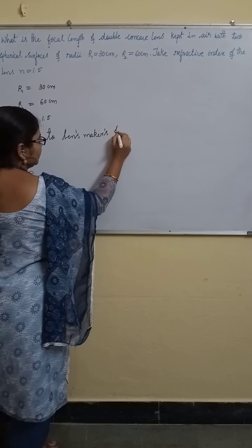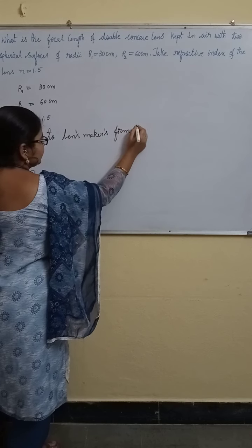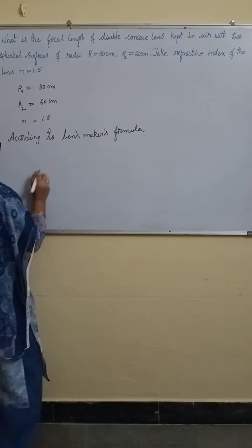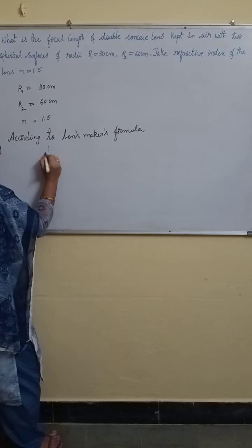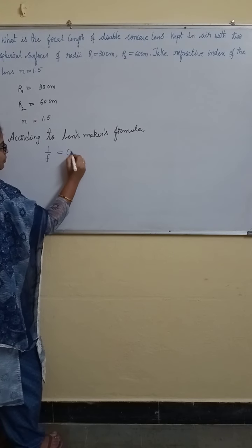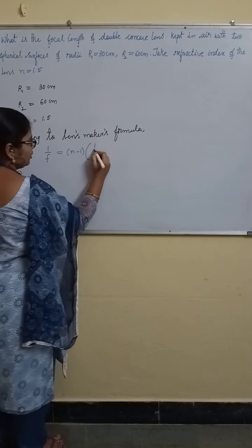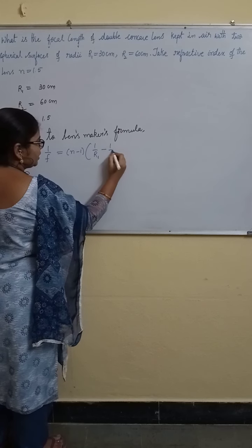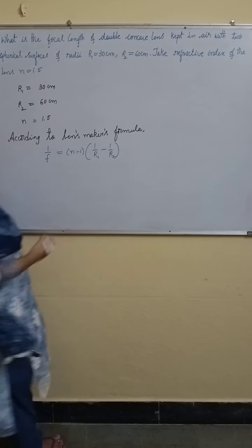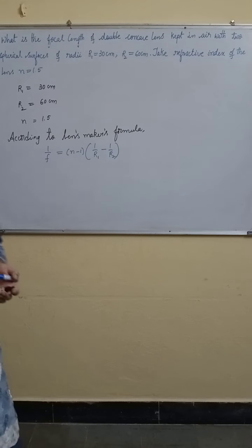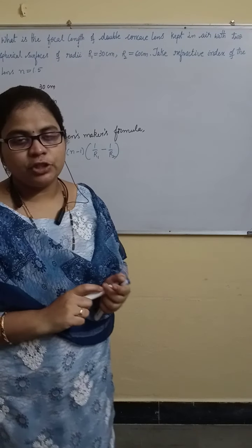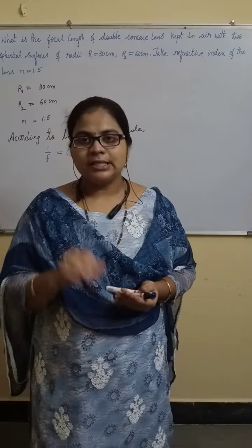Let's make a formula. What is lens maker's formula? 1 by F is equal to n minus 1 into 1 by R1 minus 1 by R2. But, after writing this formula, we should remember.